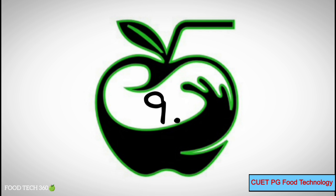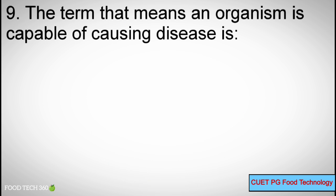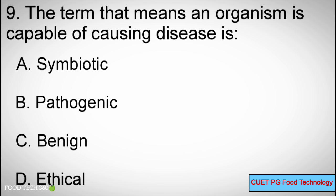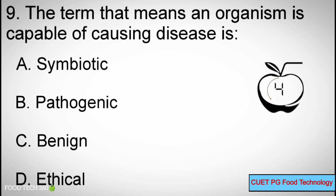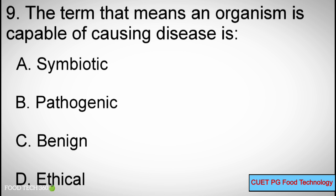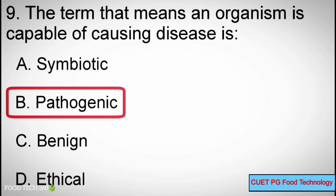Question Number 9: The term that means an organism is capable of causing diseases — Options A: Symbiotic, B: Pathogenic, C: Benign, D: Ethical. Correct answer: B, Pathogenic.